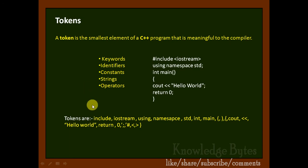Tokens are segregated into five categories as we discussed: keyword, identifier, constants, string, and operators. First, let's discuss what you mean by keywords.